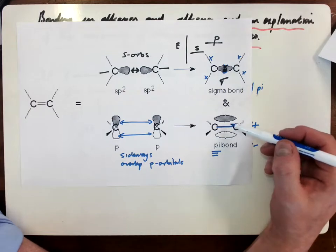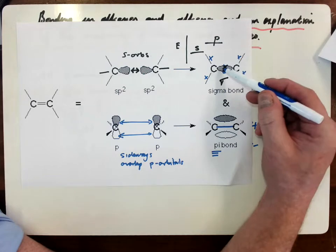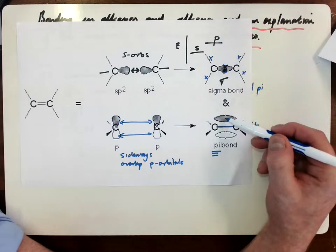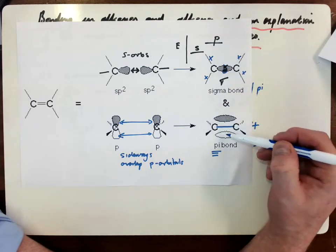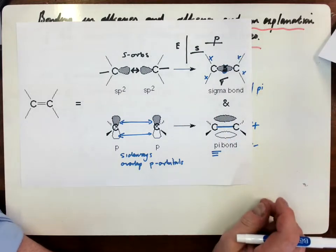The other thing that you have to remember is that the sigma electrons that are in this single bond would also repel these electrons in the pi bond, making it, again, a little bit easier to break.